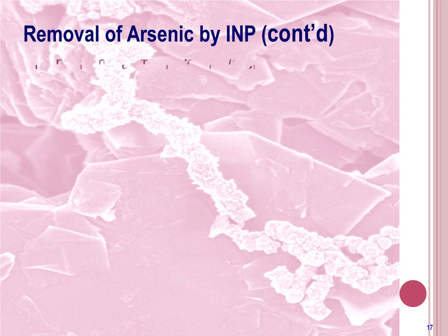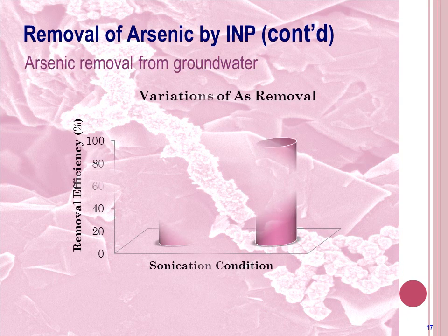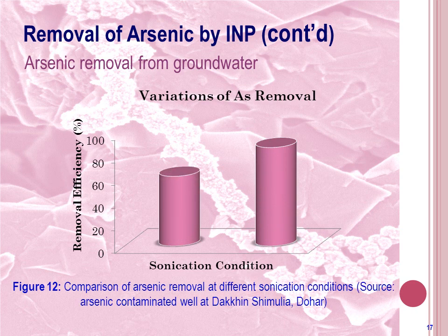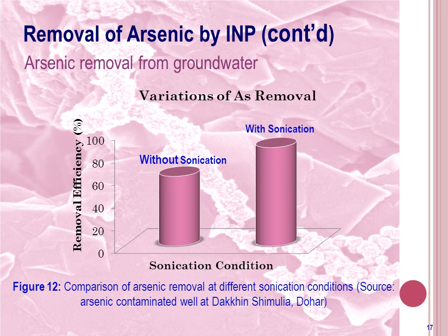For arsenic removal from groundwater, arsenic removal efficiency was found to be 61.5% without sonication, where it raised to 86.9% with sonication of the water sample after adding INP.